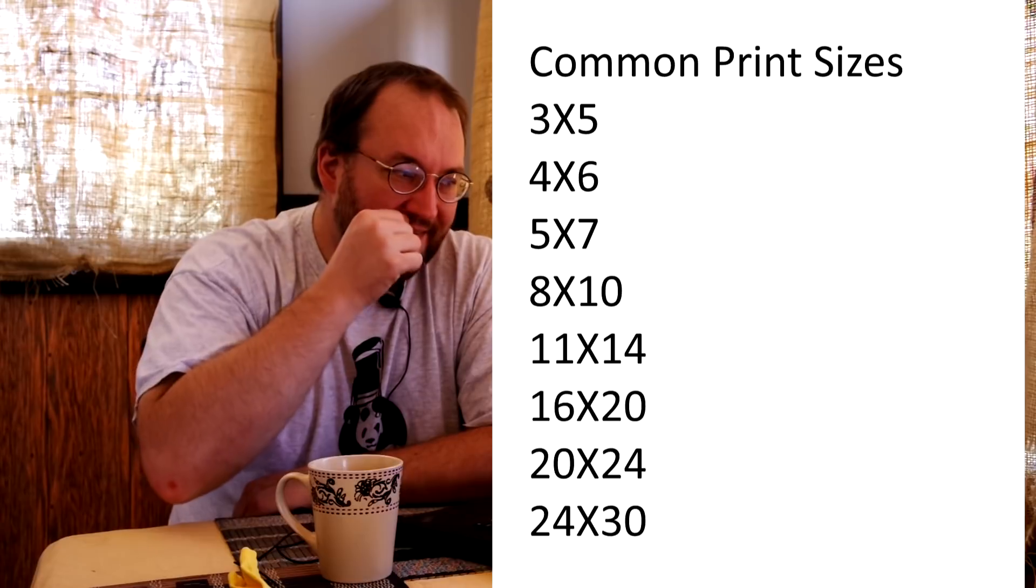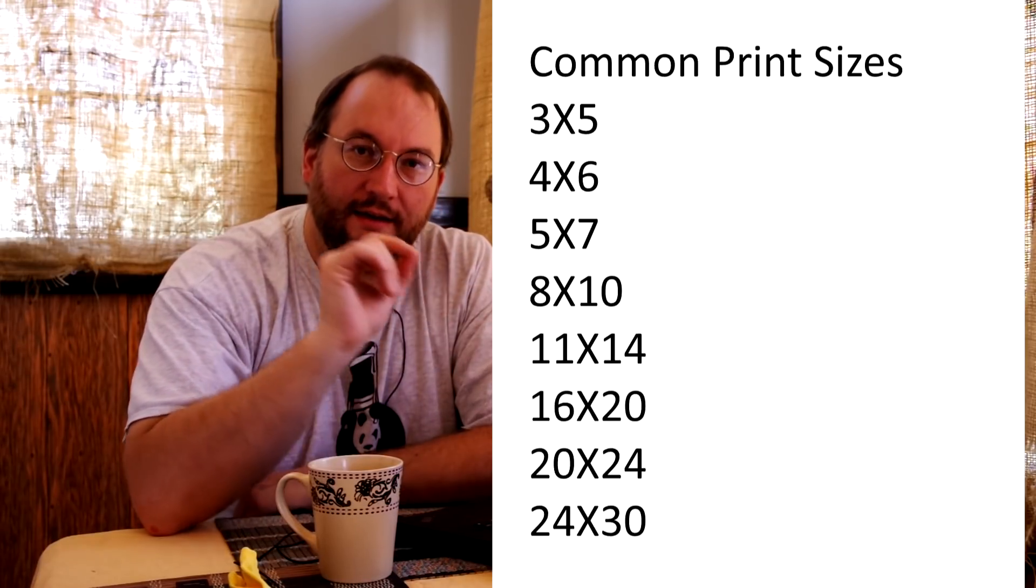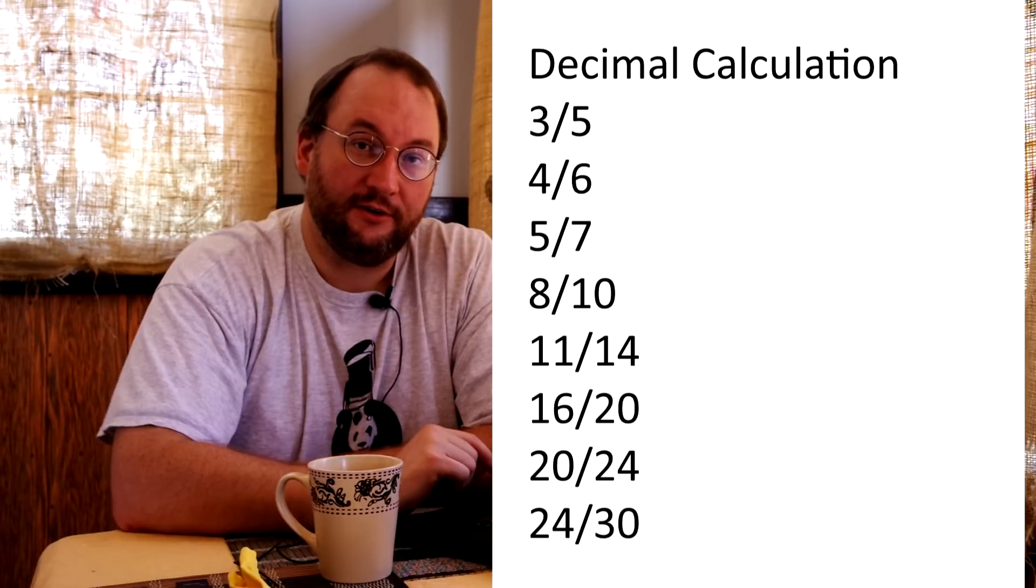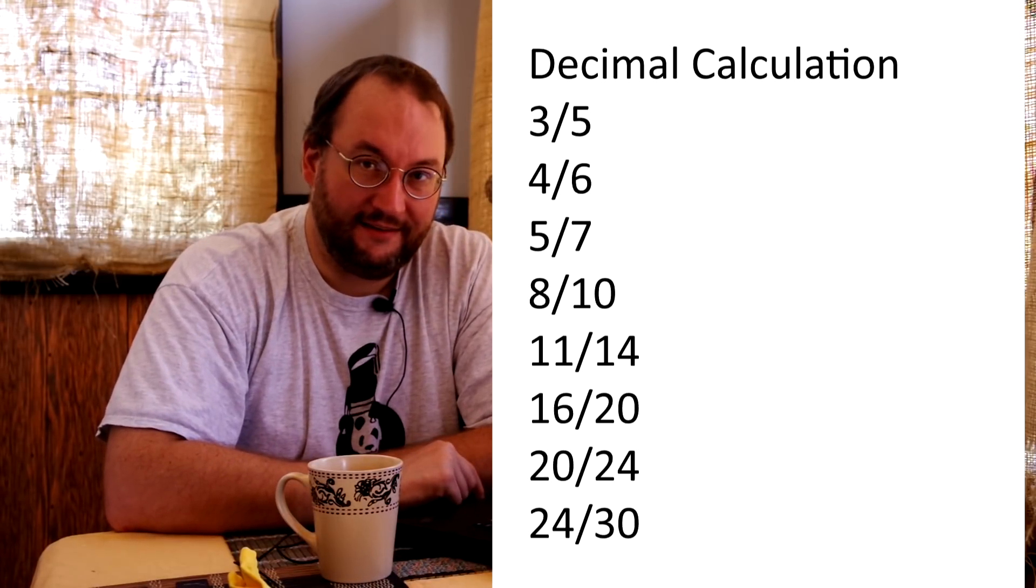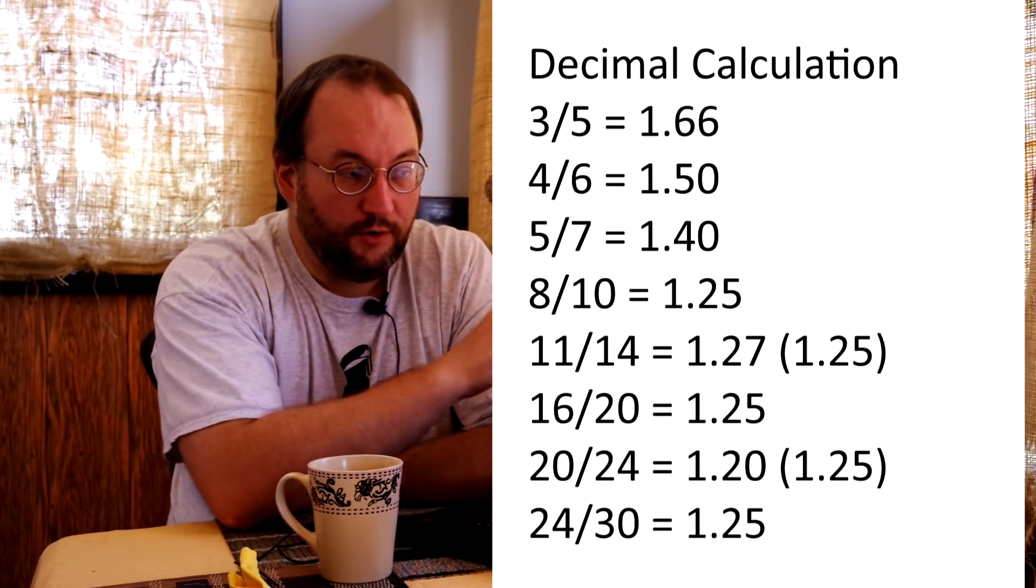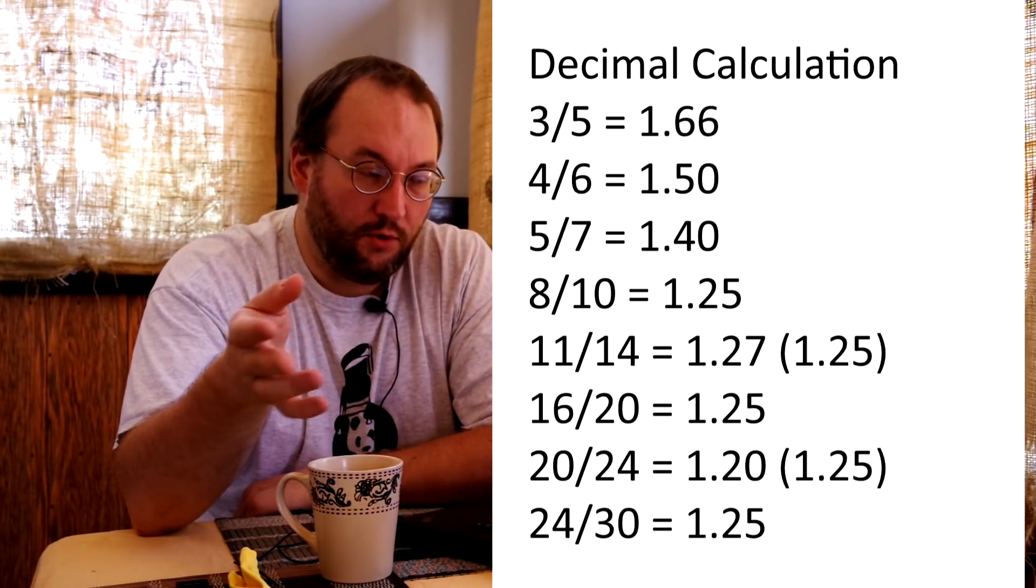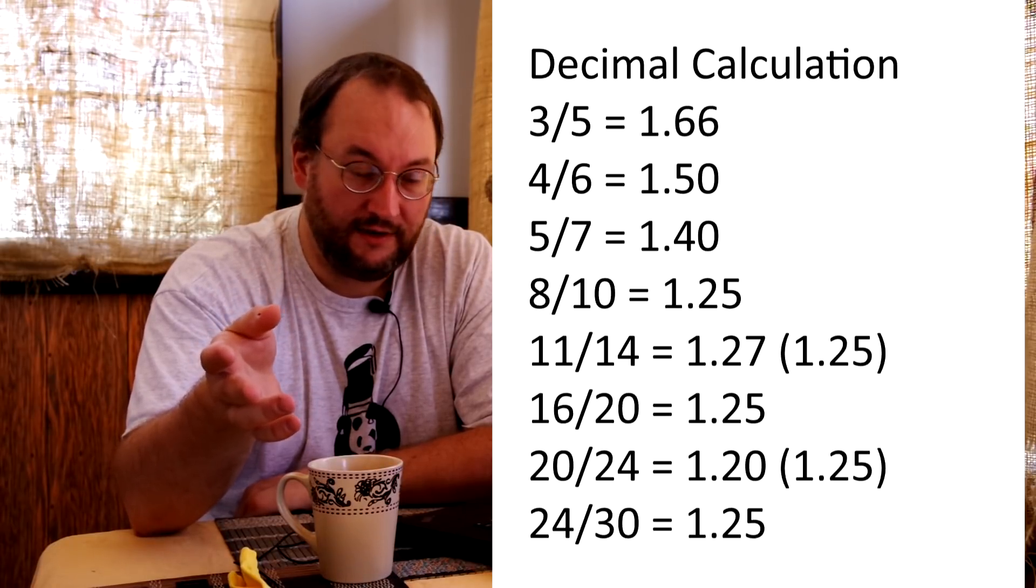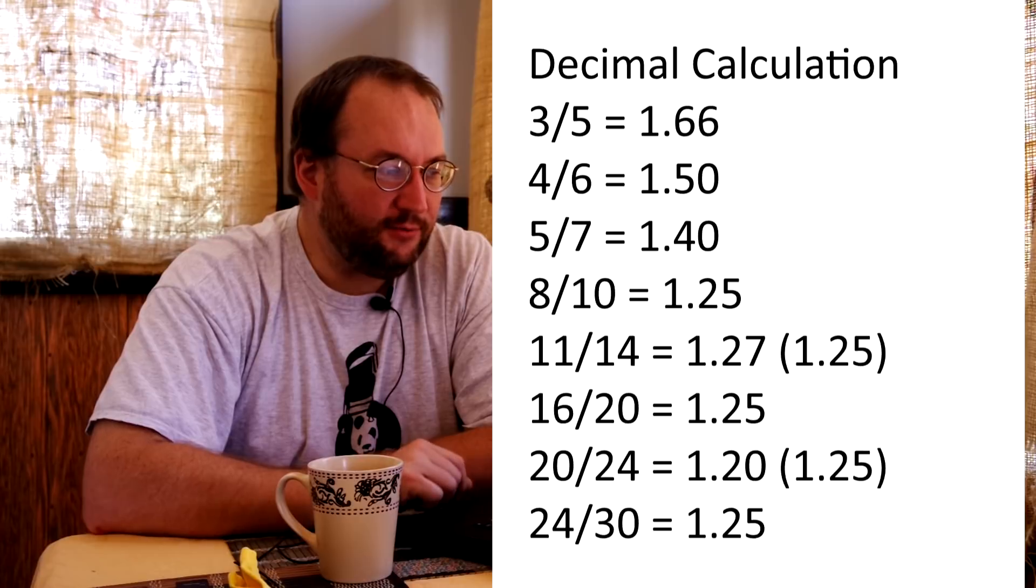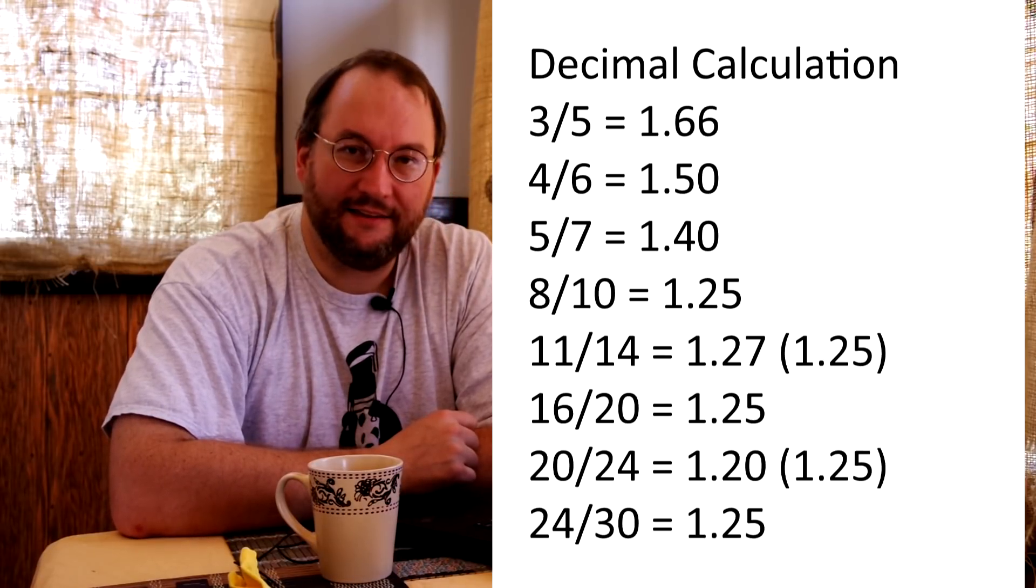The next thing we need to do to understand the relationship between print and negative is to turn each of these print sizes into a decimal number. We're going to take the first number and divide it by the second. So 3x5 actually turns into 3 divided by 5, which gives us 1.66. 4x6 is 1.5, 5x7 becomes 1.4, 8x10 becomes 1.25. 11x14 becomes 1.27, which is close enough to 1.25 that it has the same aspect ratio as 8x10. 16x20 becomes 1.25. 20x24 becomes 1.2, which again is close enough that it could count as 1.25, and 24x30 is 1.25.